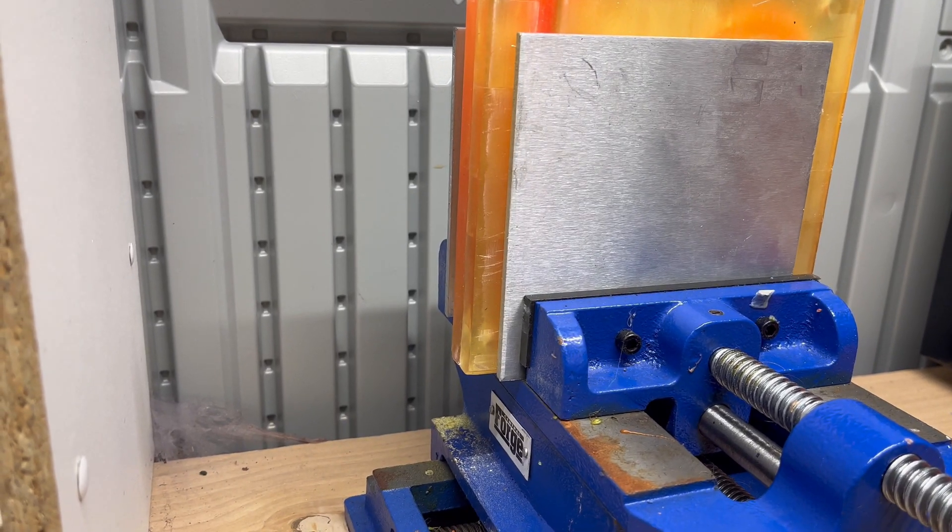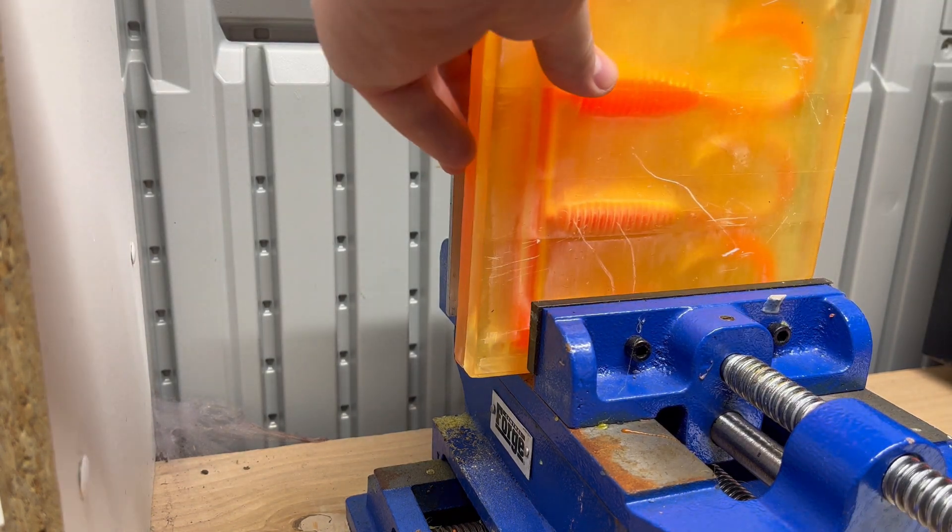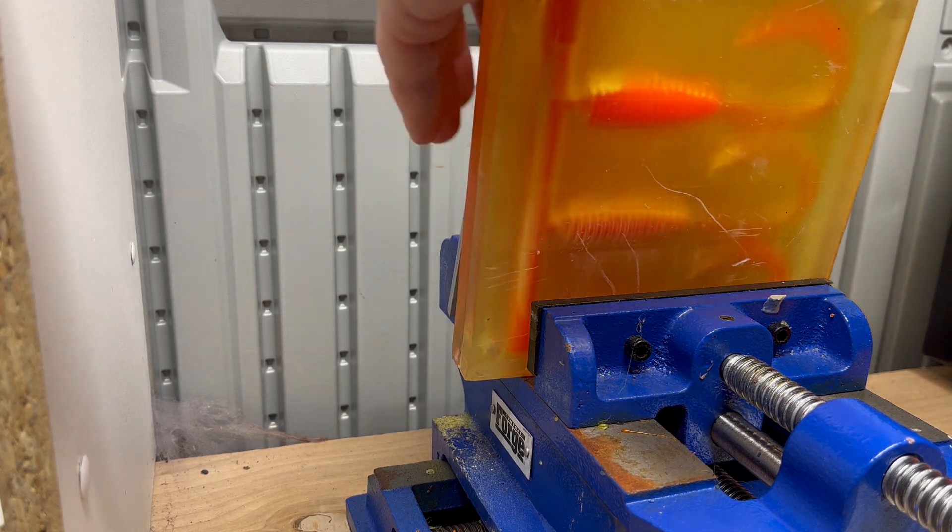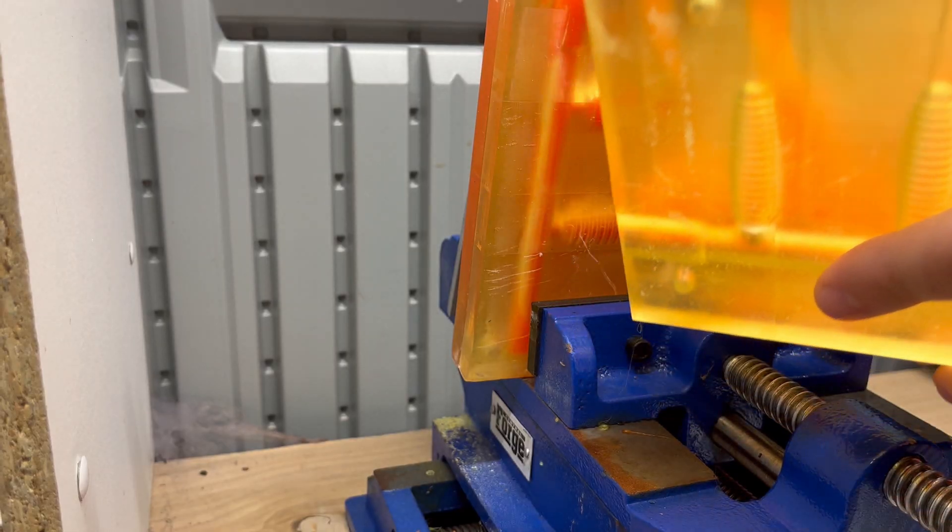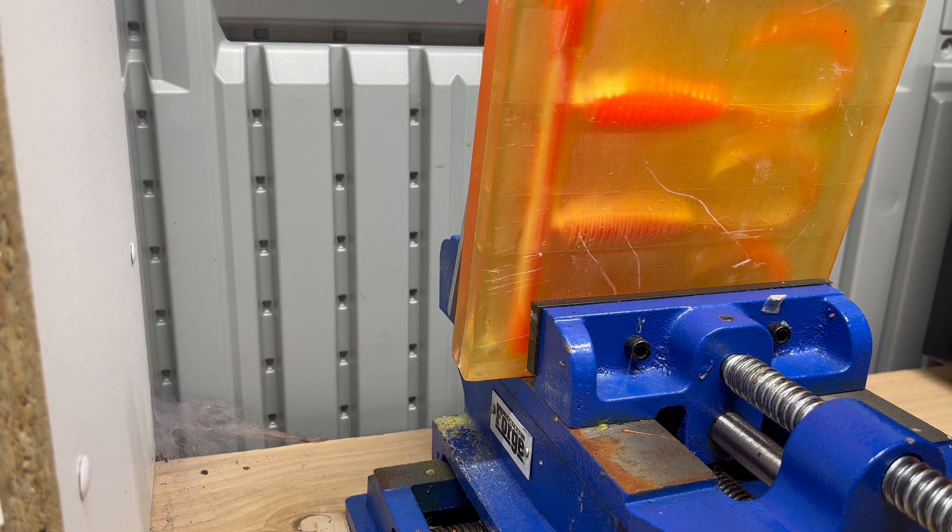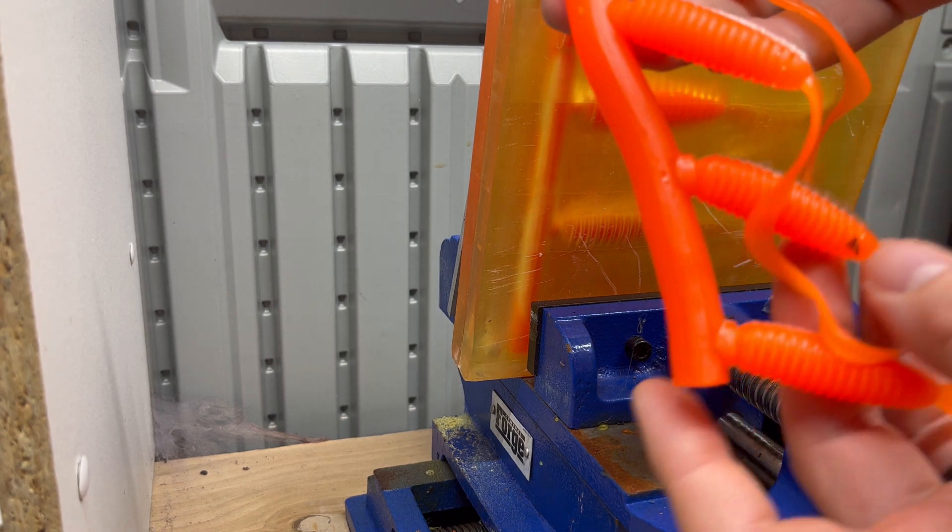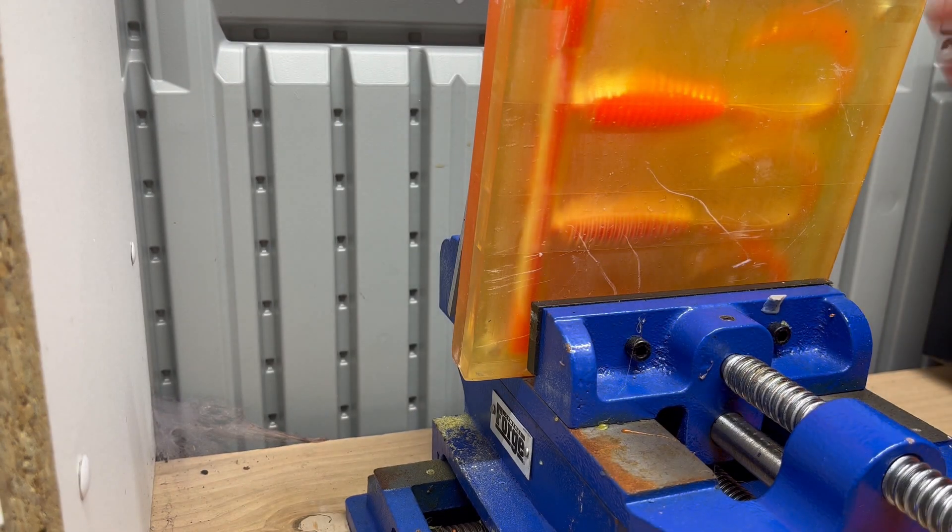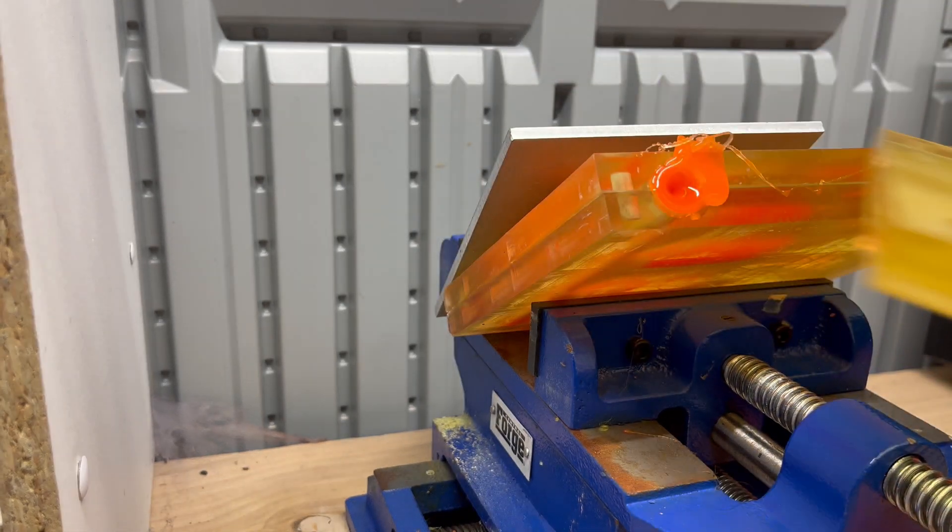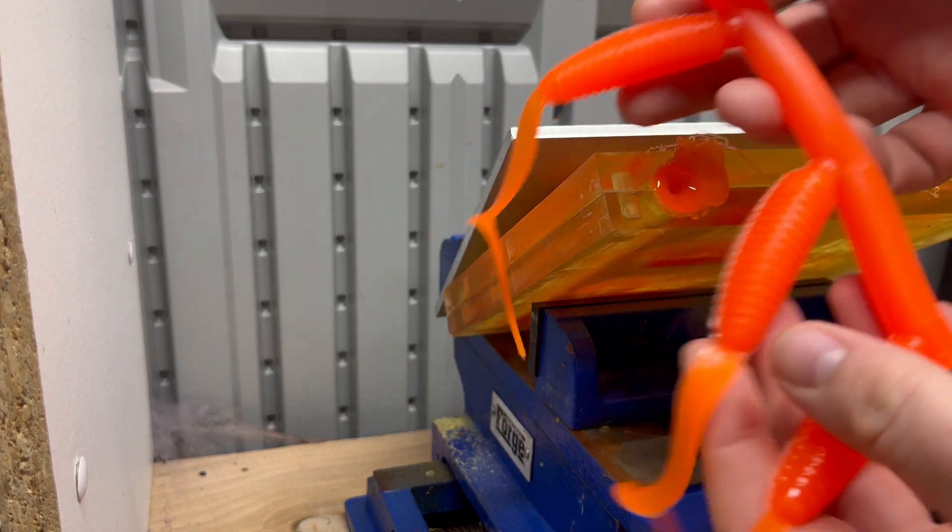This stuff should be all cooled off now, we'll demold it and see how we made out. That's our three-inch. I left a leaf in the mold, whoopsie. This is our four-inch grub, and our five-inch.